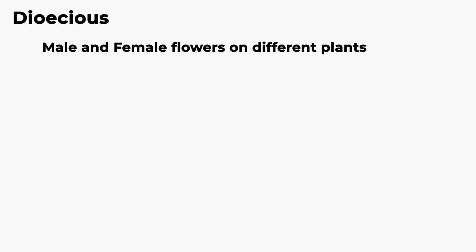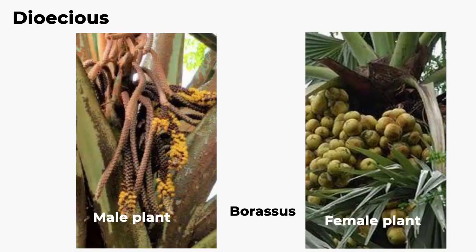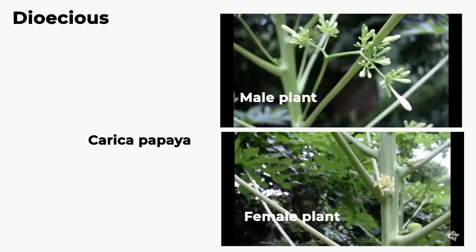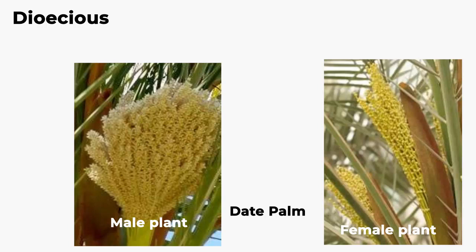The next type in dicliney is dioecious. Here, unisexual male and female flowers are seen in different plants. Examples include Borassus, date palm, and Carica papaya. Here both autogamy and geitonogamy are prevented, and the flower will get pollen from another plant of the same species.